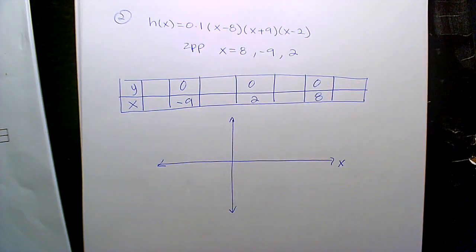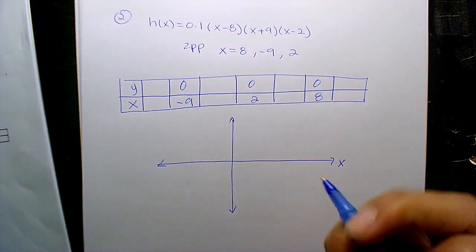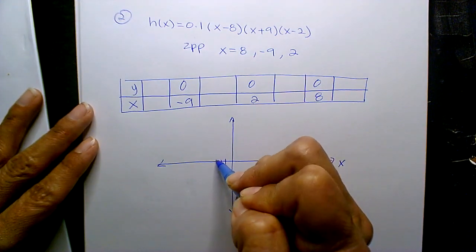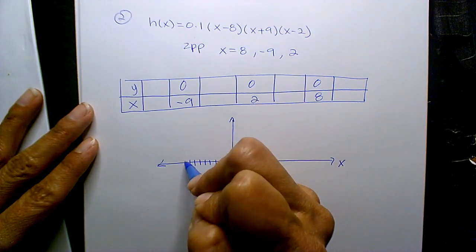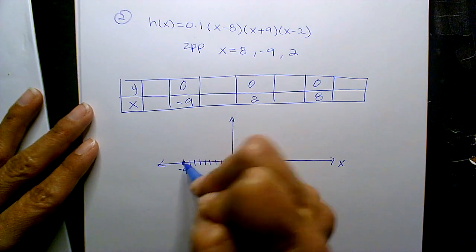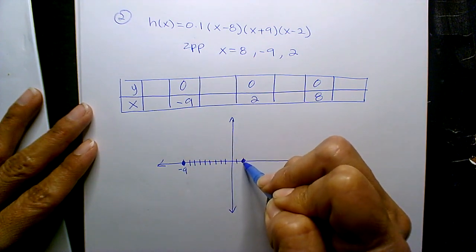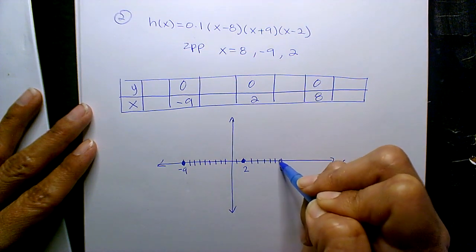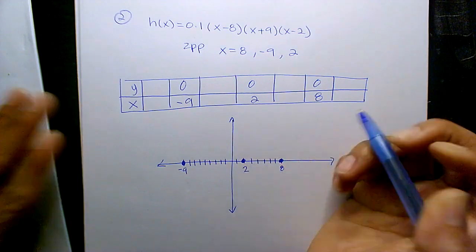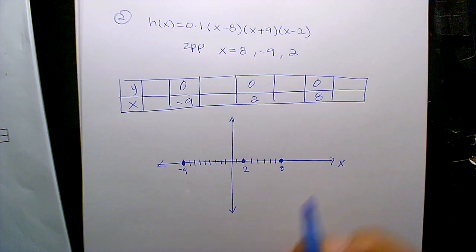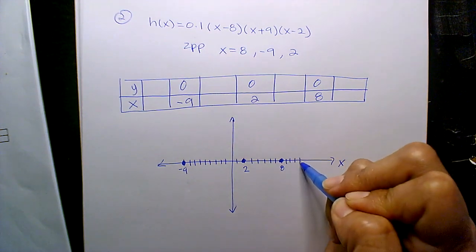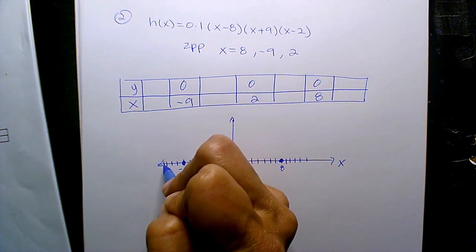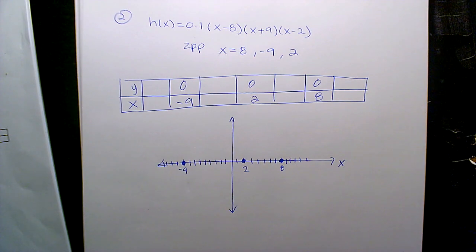If they are x-intercepts or roots or zeros or solutions, that means the y-value is 0. So when you go to plot it, that's because they are points. 3, 4, 5, 6, 7, 8. I know my graph's ugly, so sorry. But that's because they're points on the axes, they're x-intercepts.